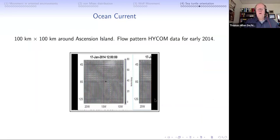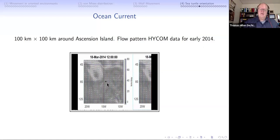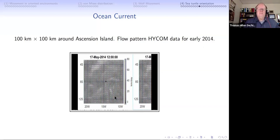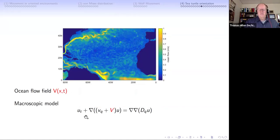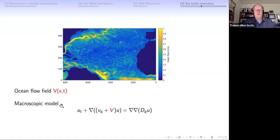For our domain around Ascension Island, here for 2014 over five months we visualize the flow field. This little triangle in the middle is Ascension Island and this is the ocean flow field at that time. These data are all available and we want to use them. In our model we have the orientation from the magnetic field, and I put the ocean flow field capital V additionally into the velocity term - so turtles are also transported by the Atlantic currents.